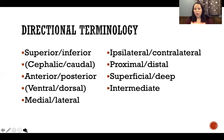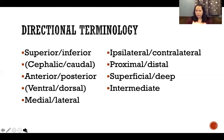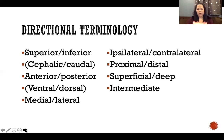Proximal and distal can only be used on the limbs — we don't use these on the head, only on the upper and lower extremities. Proximal describes a location closer toward the trunk, distal is further away from the trunk. We always use these terms to compare two things. We couldn't just say the elbow is distal — distal to what? The elbow is distal to the shoulder, and the elbow is proximal to the wrist.